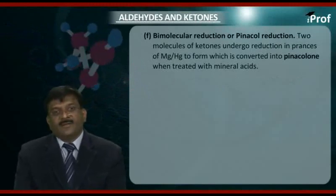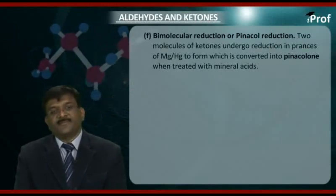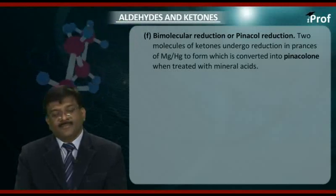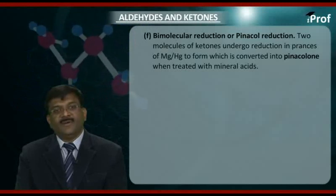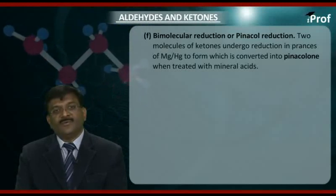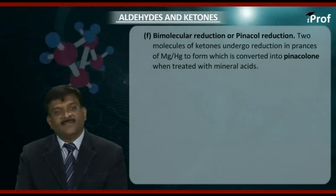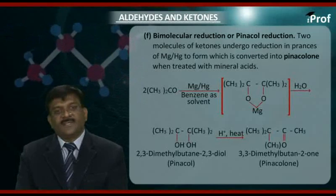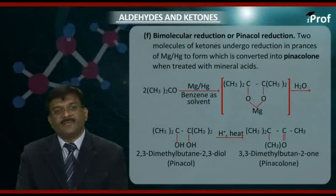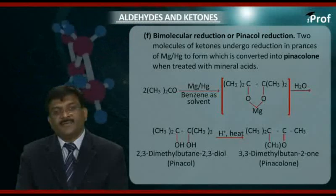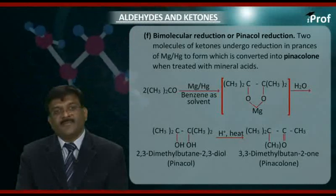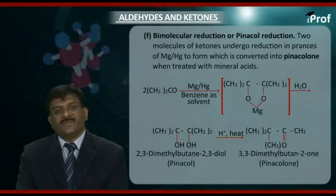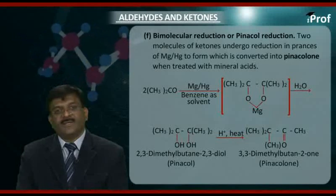Next, bimolecular reduction or pinacol reduction. Two molecules of a ketone undergo reduction in presence of mercury and magnesium to form pinacol, which is converted into pinacolone when treated with mineral acids. For example, acetone (CH3CO) reacts with magnesium and mercury in benzene as solvent to form an intermediate compound which on further hydrolysis gives 2,3-dimethylbutane-2,3-diol (pinacol).